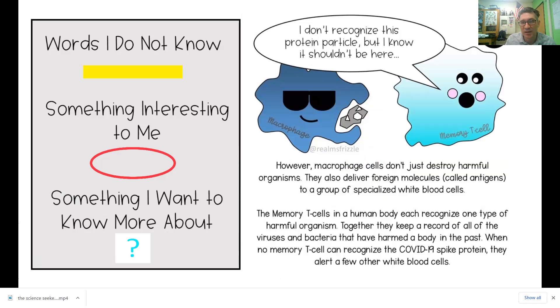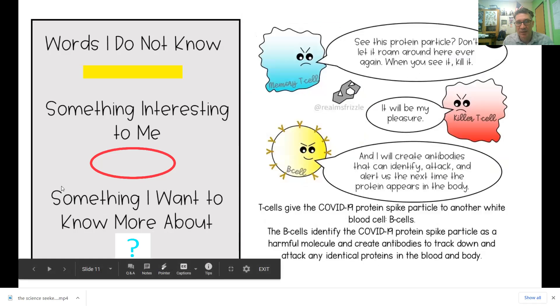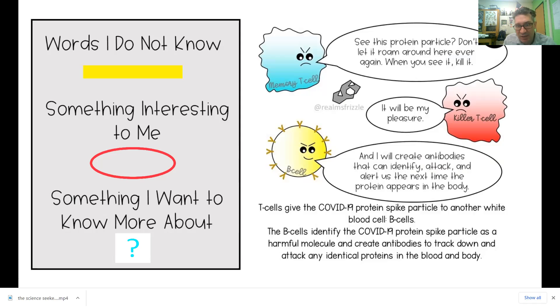When memory T cells recognize the COVID-19 spike protein, they alert other white blood cells to go to work. T cells give the COVID-19 spike particle to another white blood cell. T cells identify the COVID particles as harmful molecules, and then create antibodies to track down and attack any proteins from the blood and the body.